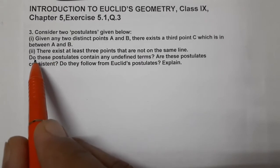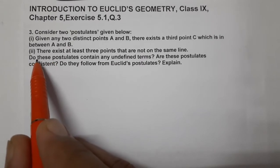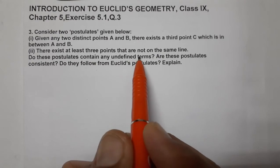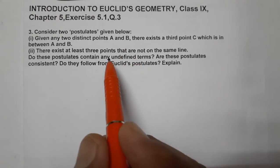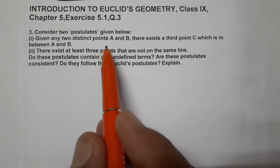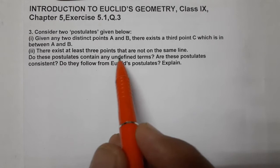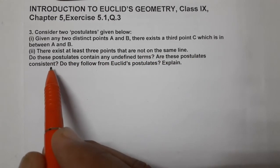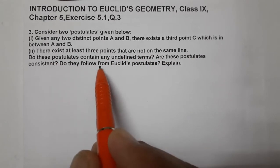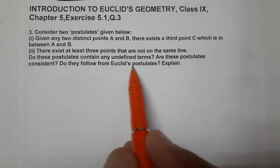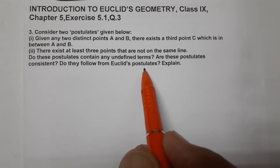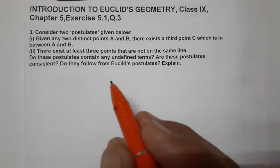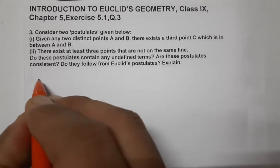Now, what is the question asking? Do these postulates contain any undefined terms? Are these two postulates consistent — are they correct? Do they follow from Euclid's postulates? Explain. There are so many undefined terms — let's start listing them.